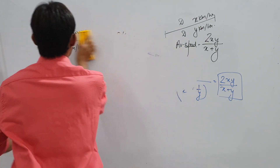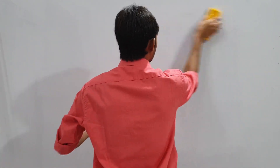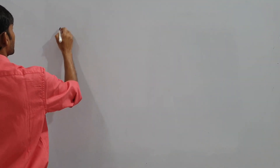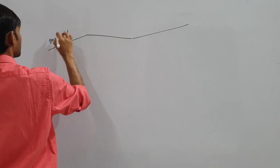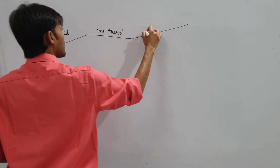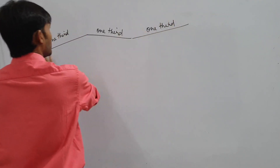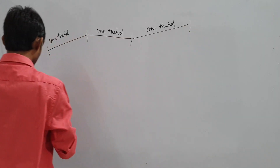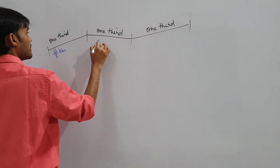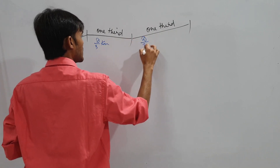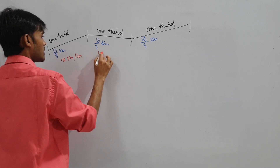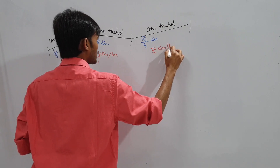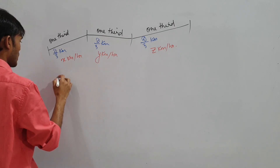There is one more question type that appears in exams, especially banking. It's a calculation-based question involving one-third journey. The journey is divided into three equal parts — each d/3 km — traveled at x, y, and z km per hour respectively. Find average speed.